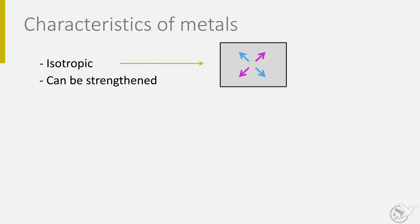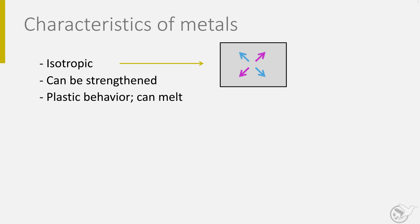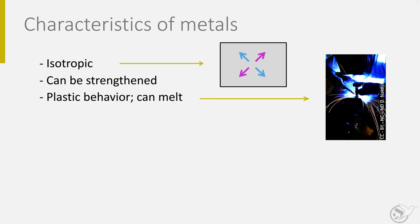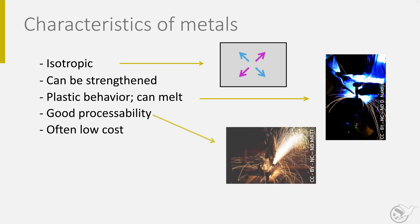Second, metals can be strengthened easily. Alloying elements can be dissolved in the molten metal, thereby the properties can be influenced. Metals and their alloys can be easily processed by melting and casting, but also by plastic deformation. By applying a high force, the material yields and changes its shape. Finally, metals are often reasonably priced because they are produced in large quantities.